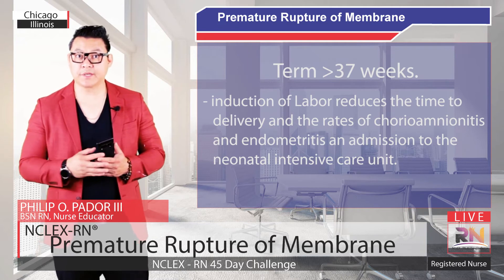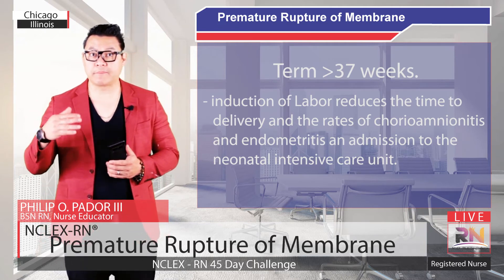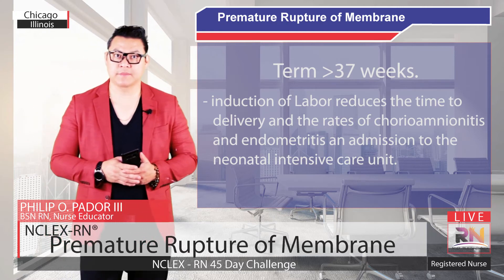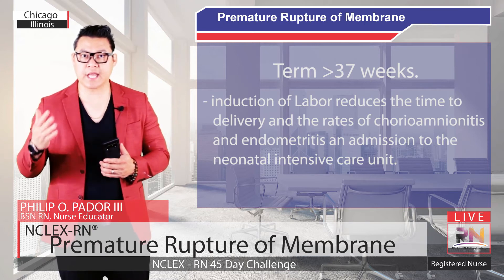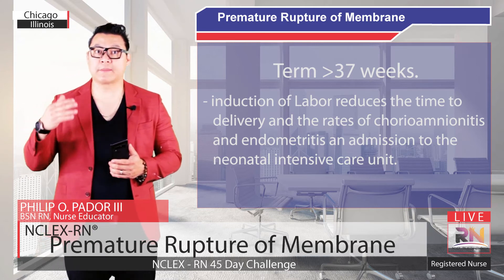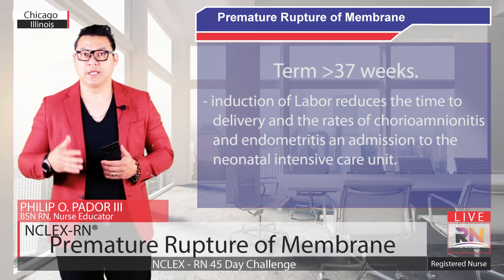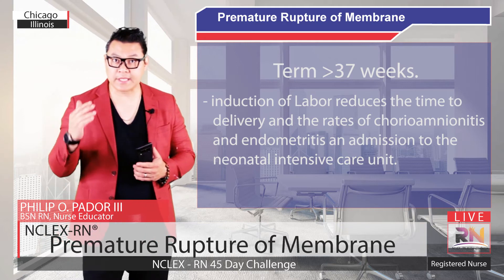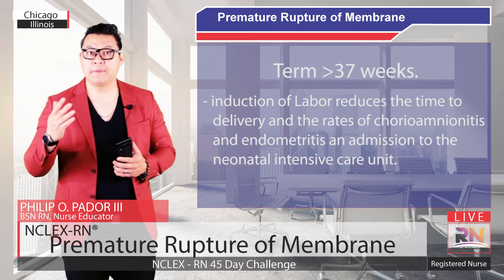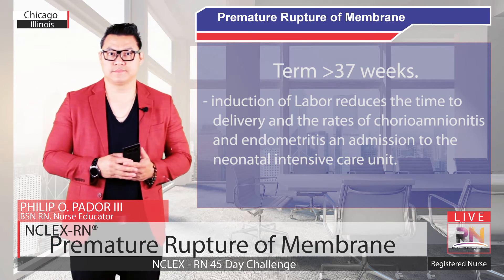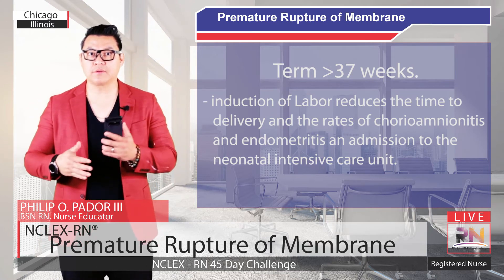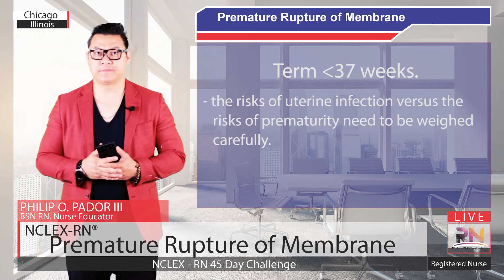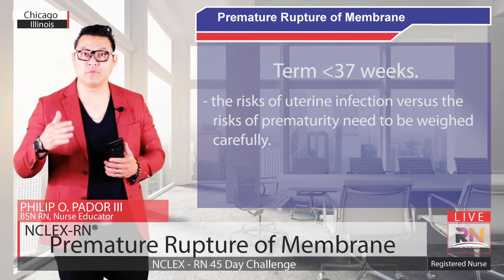If the patient is term — greater than 37 weeks — approximately 90% of patients will go into spontaneous labor within 24 hours. Labor should be induced either at the time of presentation or the patient can be expectantly managed. Induction of labor reduces the time to delivery and the rates of chorioamnionitis, endometritis, and admission to the neonatal intensive care unit. If the patient does not go into spontaneous labor on her own, labor induction should be performed with oxytocin.